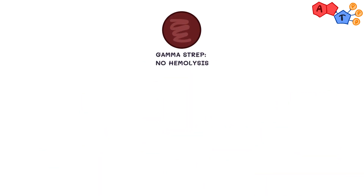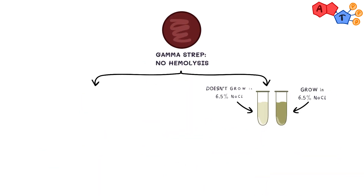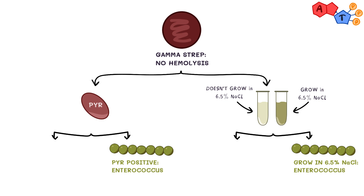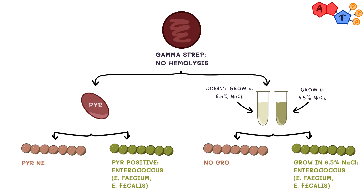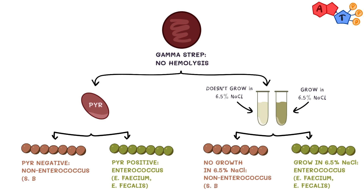The gamma group will be further divided based on the ability to grow in 6.5% sodium chloride and the presence of PYR enzyme. The first group, which is enterococcus, includes Enterococcus faecium and Enterococcus faecalis. This group can grow in 6.5% sodium chloride and has PYR. On the contrary, the non-enterococcus group cannot grow in 6.5% sodium chloride and lacks PYR. This group includes Streptococcus bovis. A small note: enterococci can sometimes be classified as alpha hemolytic, so don't be confused — stick to the previous classification, but be aware of this fact.